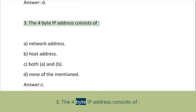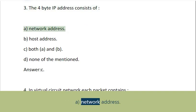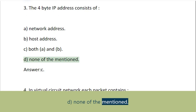Question 3: The 4-byte IP address consists of: A. Network address, B. Host address, C. Both A and B, D. None of the mentioned. Answer: C.